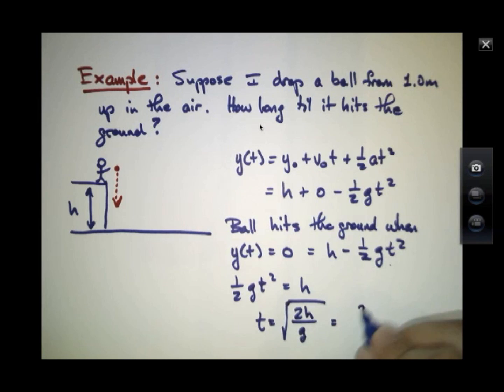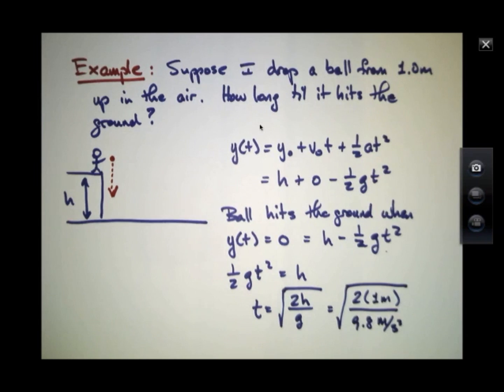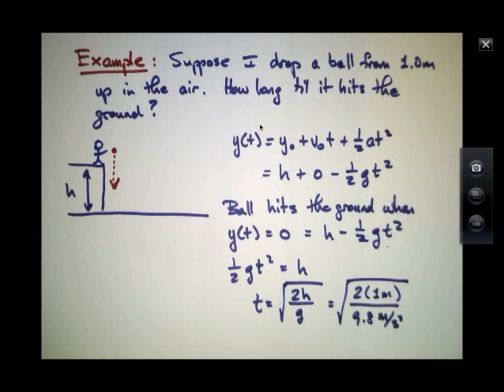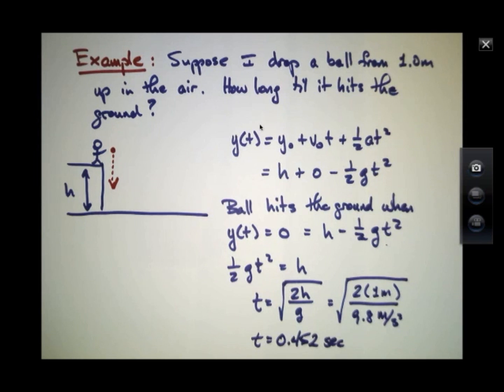We can try putting in our numbers. This is 2 times 1 meter over 9.8 meters per second squared. Still have to take the square root. It's worth doing a unit check right now. I have meters here, which will cancel meters in the denominator. And I have seconds squared in the denominator of the denominator, so this will flip and become seconds squared in the numerator. I'll take the square root, so this will only be in seconds. I'll punch this into my calculator. Works out to be 0.452 seconds.